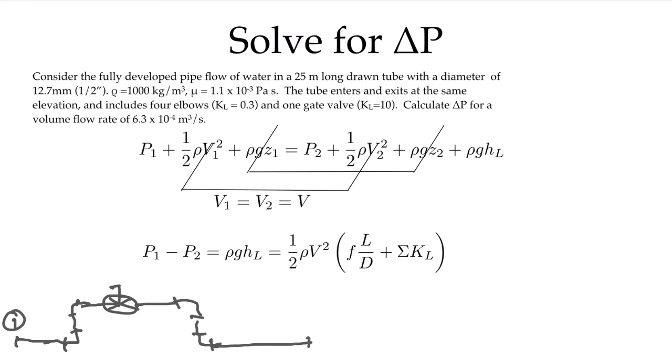So it might look something like this. This would be our station 2, and the total length of all the piping system is given as 25 meters. These straight sections would add up to 25 meters. We have one, two, three, four elbows and one gate valve.